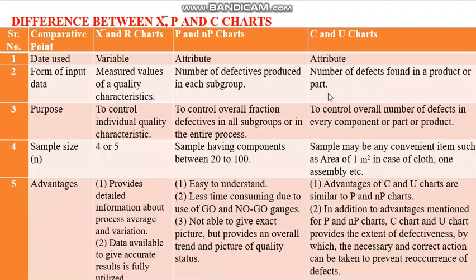The purpose of X-bar and R charts is to control an individual quality characteristic — for example, diameter alone or thickness alone. P and NP charts are used to control the overall fraction defectives in all subgroups or in the entire process, while C and U charts control the overall number of defects in every component, part, or product.